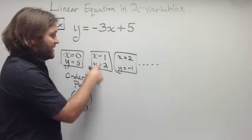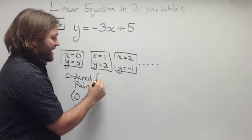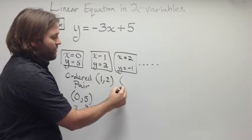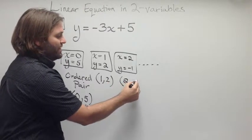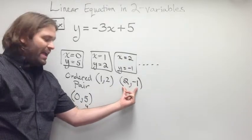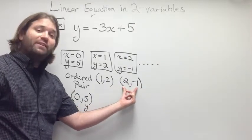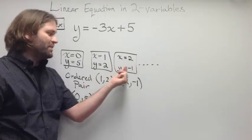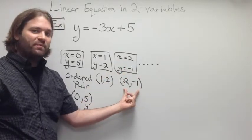We always let the first coordinate here be the x value, and the second coordinate is the y value. So, this solution to this equation, we could represent as 1, 2, and this solution, we could represent as 2, negative 1. Now, having this as an ordered pair is nice, because it's a lot easier to write than having to do x is equal to something and y is equal to something every time.